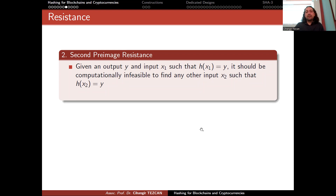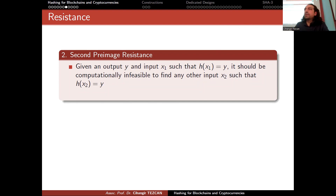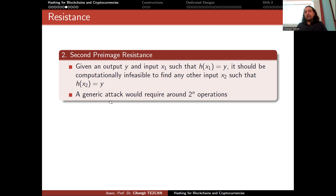These collisions have to happen because the input space is larger than the output space. But we want it to be computationally infeasible — meaning that if you have x1 and y, it should be hard for you to find a different x2 that also gives you y. For a generic attack, you can try random inputs and expect to hit the value y after 2^n operations. This is the expected value for a generic brute force attack.